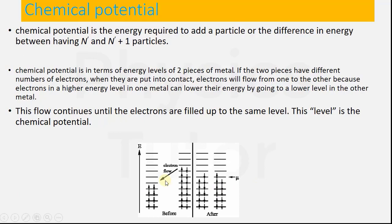In the same sense, chemical potential also works so that when electrons gain energy they go to a higher level, but when they lose energy they go to a lower energy level. This flow continues until the electrons are filled up to the same level. This level is the chemical potential.